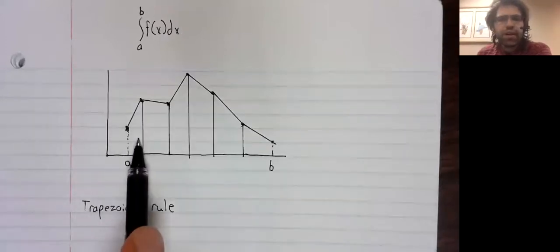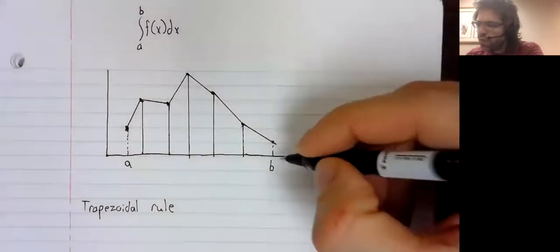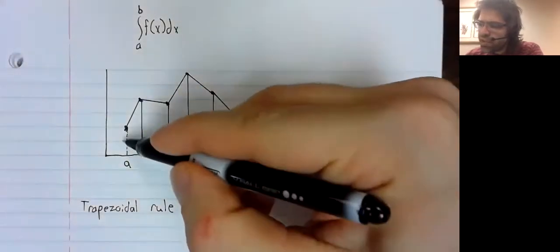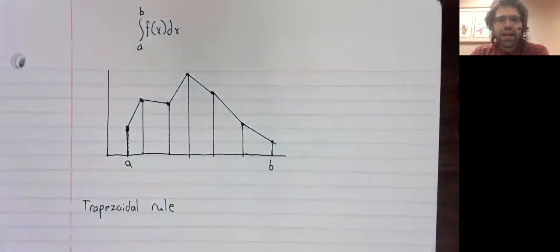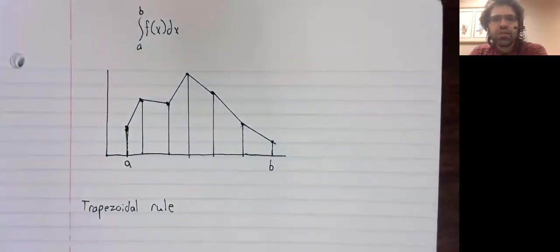So we can find the area of all of these regions. We can then add those approximations up to approximate the area under a curve.